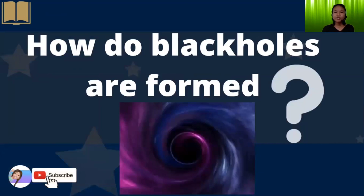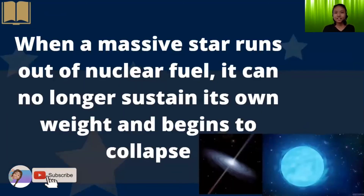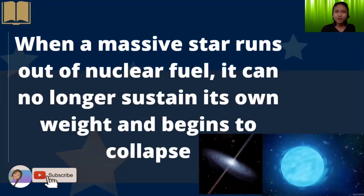Another question: how are black holes formed? The answer is that when a massive star runs out of nuclear fuel, it can no longer sustain its own weight and begins to collapse. As we can see in the picture, the black hole and an example of a massive star are shown.